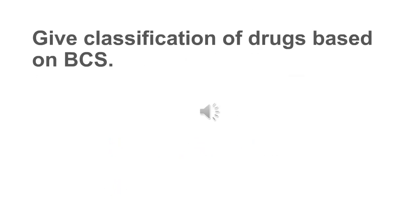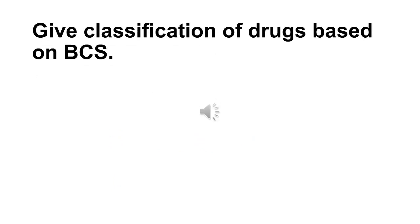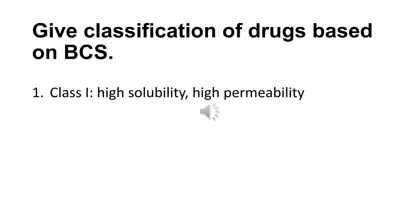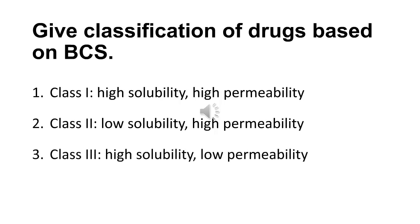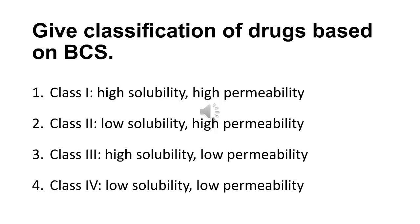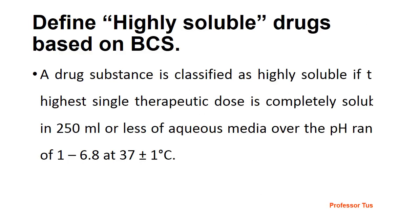Classification of drugs based on BCS: Class 1 — high solubility, high permeability; Class 2 — low solubility, high permeability; Class 3 — high solubility, low permeability; Class 4 — low solubility, low permeability.